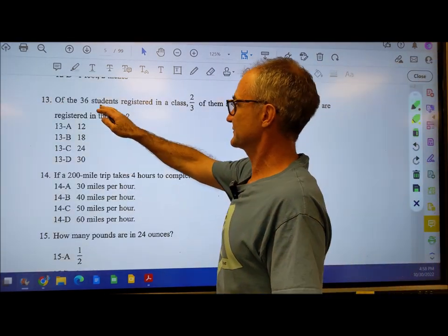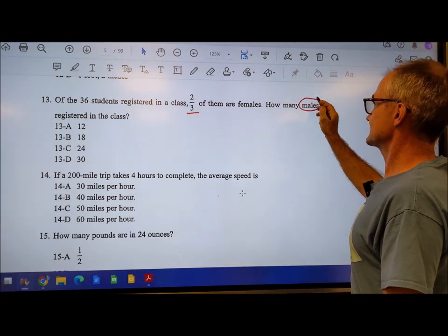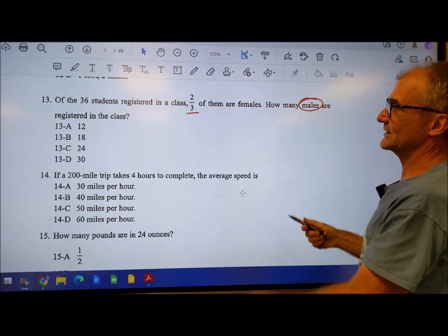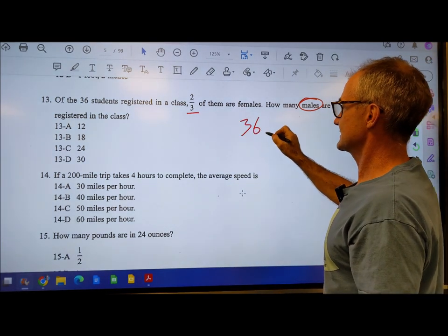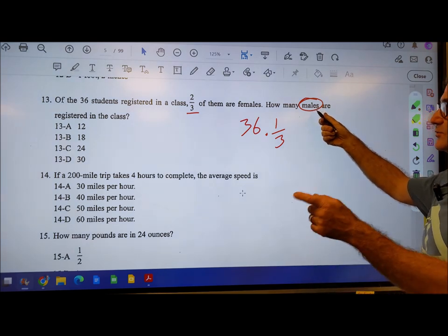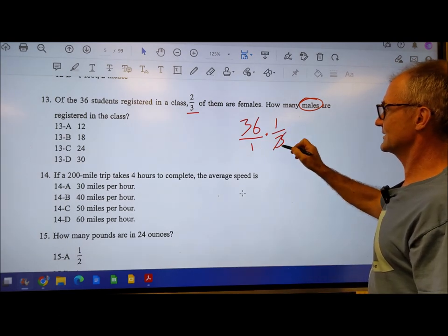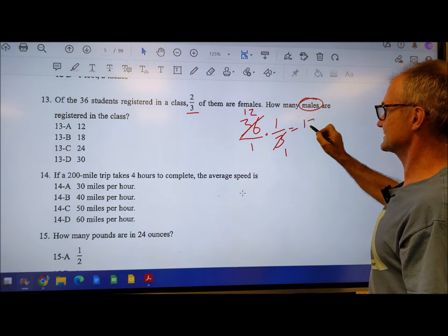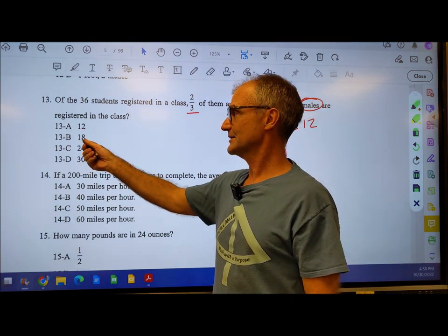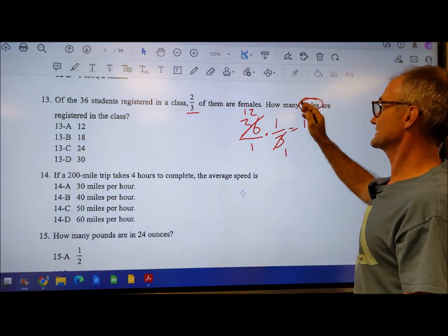Number 13, 36 students in a class, two thirds of them are females. How many males? I'm going to highlight that because the natural guess is going to be females. I really want the remaining one third. So I do 36 times one third. Two thirds are females, I want to know how many males. One minus two thirds gives me one third. Three goes into here 12 times. Multiply across, get 12 over 1. Correct answer is A, 12 males.